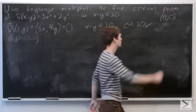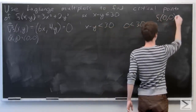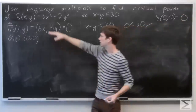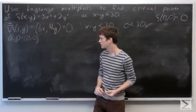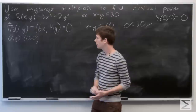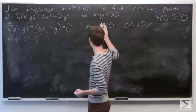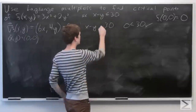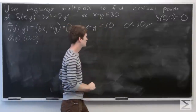We can go ahead and calculate f at (0, 0) right away — it's just 0 when we plug in x and y equals 0. So now we want to check on the boundary, and that's when x minus y is equal to 30.